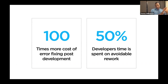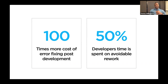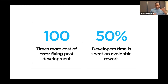Let's look at some industry-wide numbers. Fixing an error after development is 100 times more expensive than fixing it before the project is completed, and up to 50% of developers' time is spent on avoidable rework. What we know from UX is that a lot of these costs can be avoided. These numbers boil down to productivity — time saved could be spent on better initiatives, working on the right problems, and doing more meaningful work.